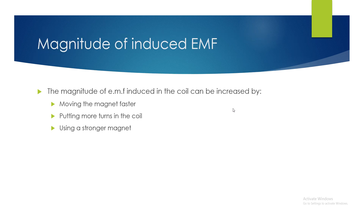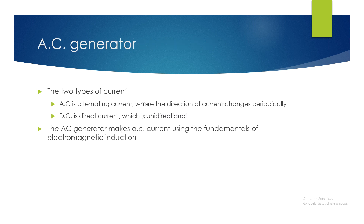The magnitude of the induced EMF can be increased by three things: one, moving the magnet faster; two, putting more turns in the coil; and three, using a stronger magnet. Now that we know the fundamentals of electromagnetic induction, we can use that to create AC current. There are two types of current: AC, or alternating current, where the direction of current changes periodically, and DC, or direct current, which is unidirectional and doesn't change direction at all.